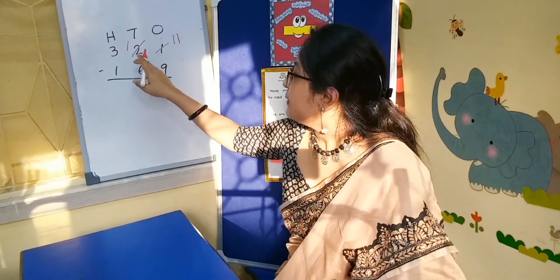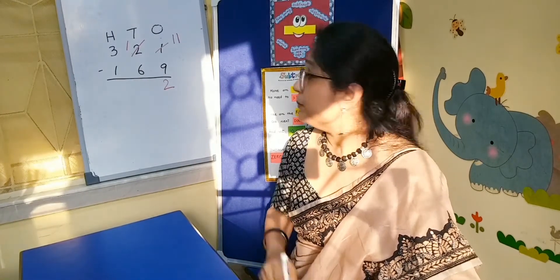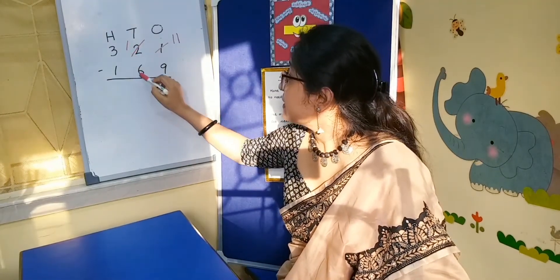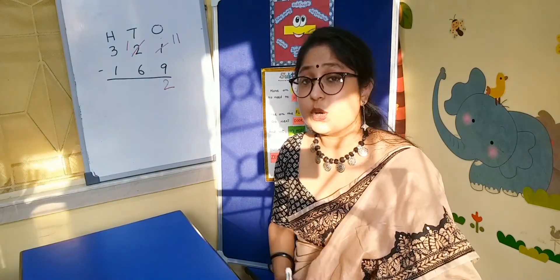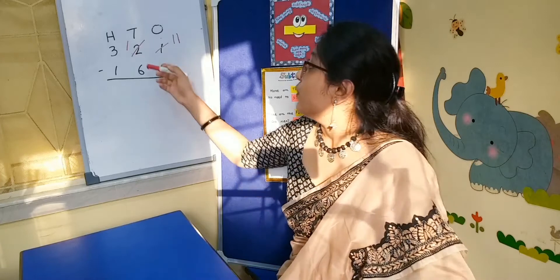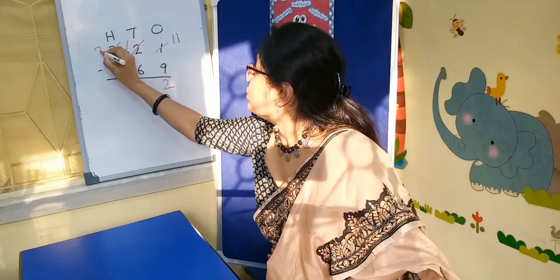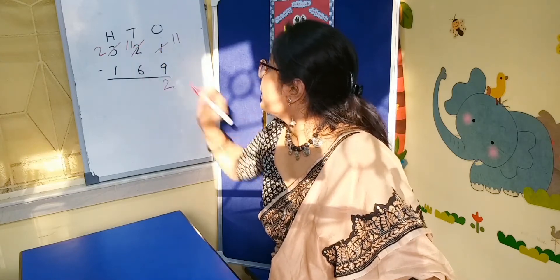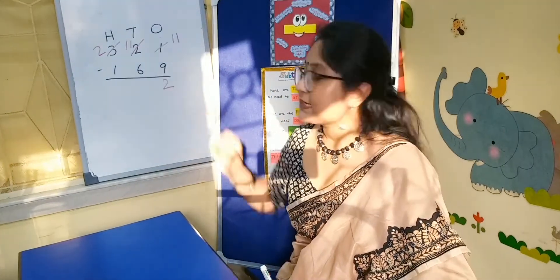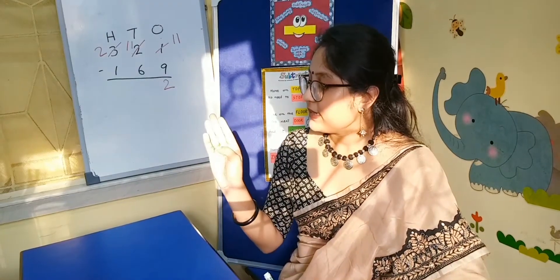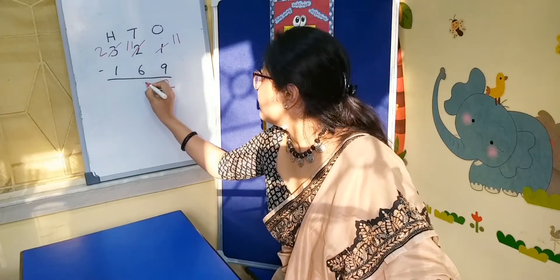And again, it becomes 1 in the tens column. And it is less on the top and more on the floor. So we have to borrow again from the hundreds column. That is, 3 will become 2 and it will become 11. So now counting from 6: 6, 7, 8, 9, 10, 11 — we will write 5 here.